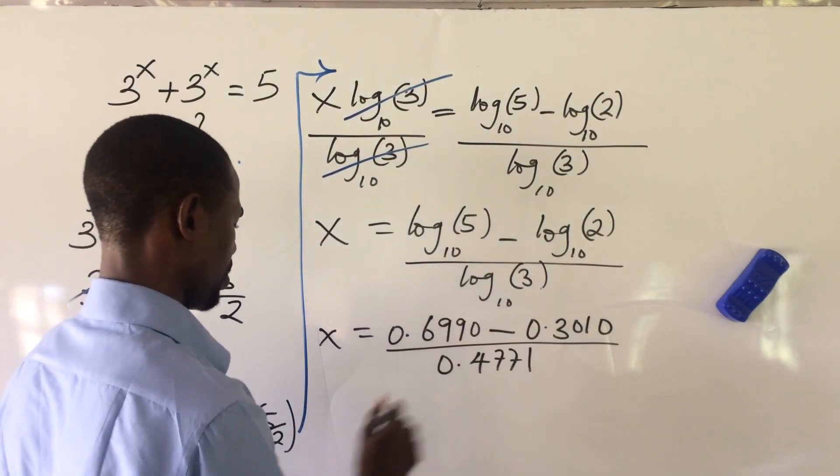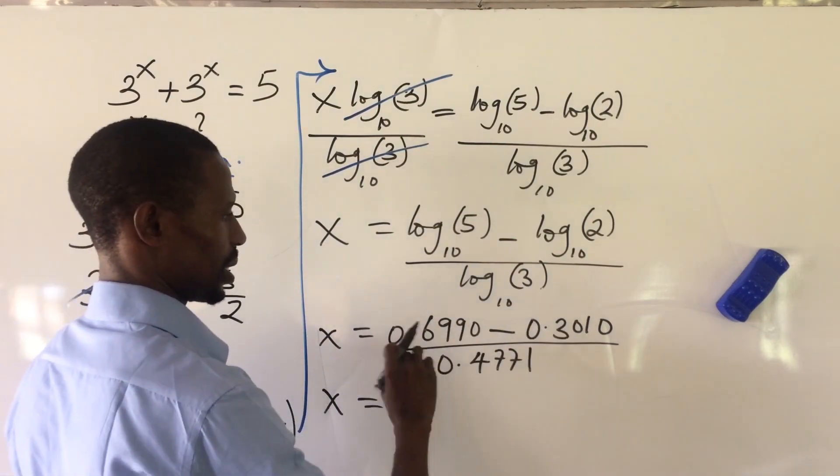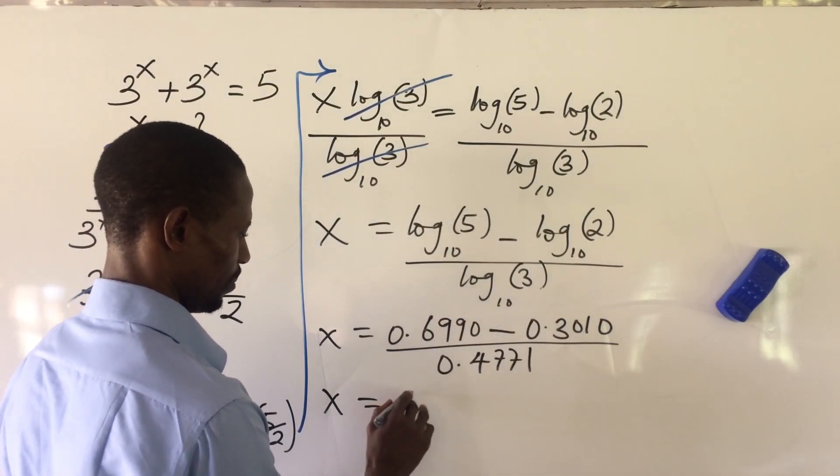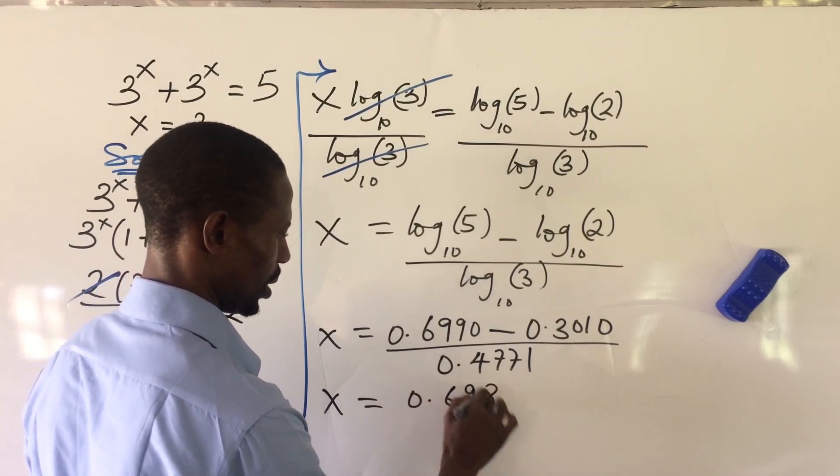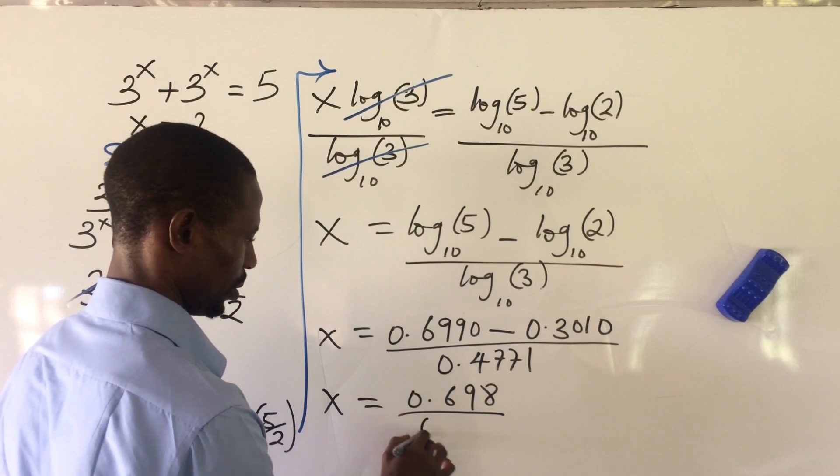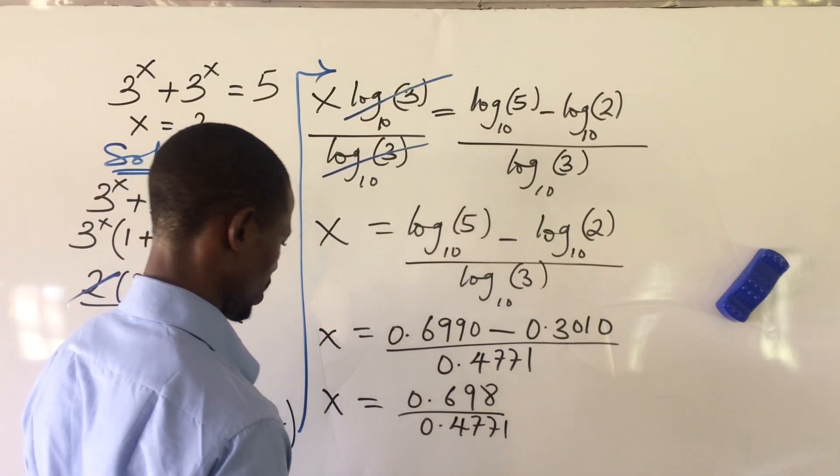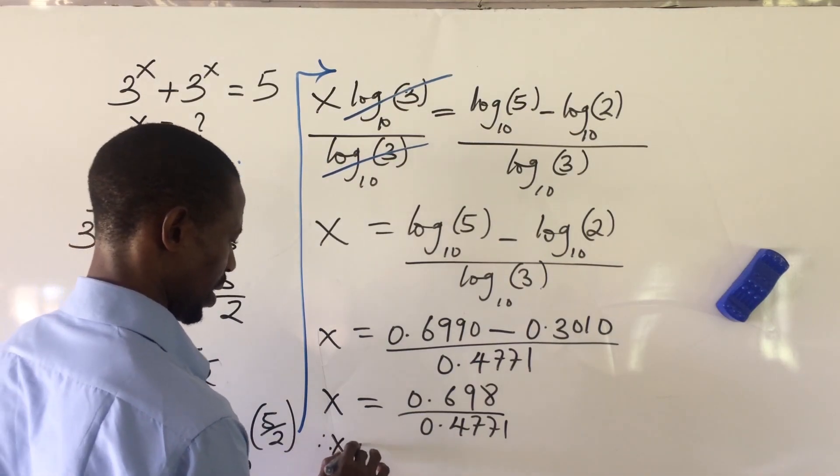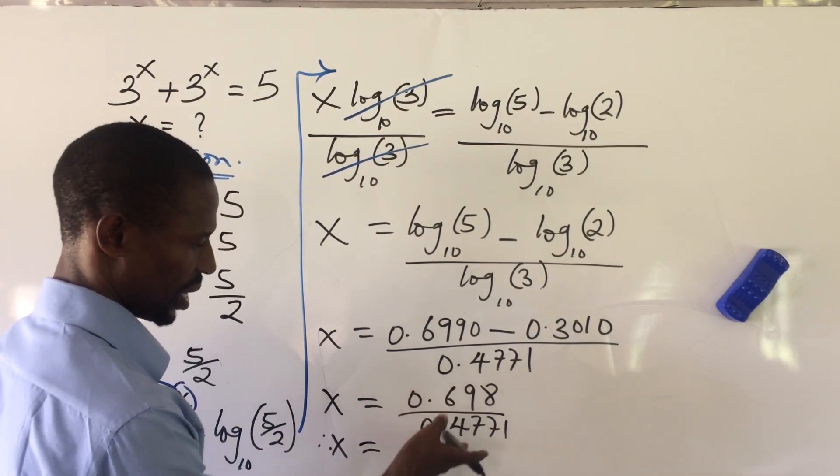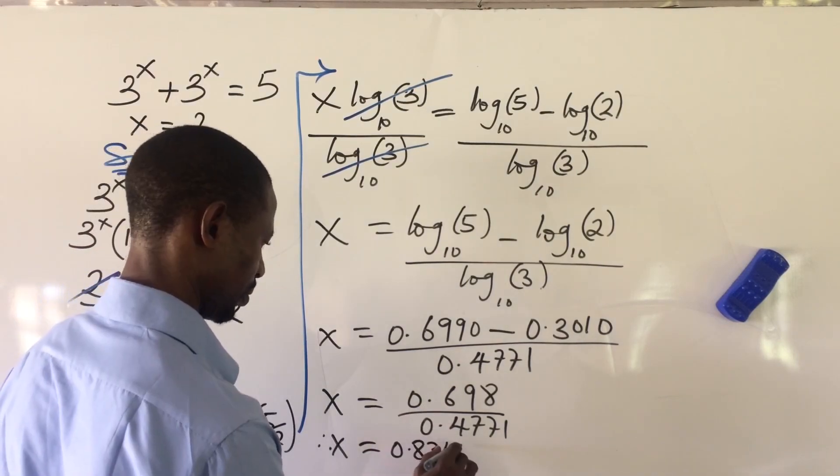So let's go ahead and subtract the numerator. So we have our x equal to, if we subtract this, we're going to come out with 0.6980 all over, the denominator remains 4771. And so therefore, we can get our x, if we divide this by this, to be 0.8342.